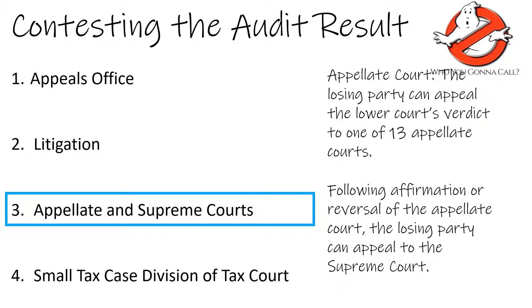Once the appellate court hears the case, it can be appealed to the Supreme Court, although it is rare for the Supreme Court to hear a tax case. Any of the tax decisions that become of a lower court or an appellate court become precedent for future tax conditions that result from similar backgrounds.